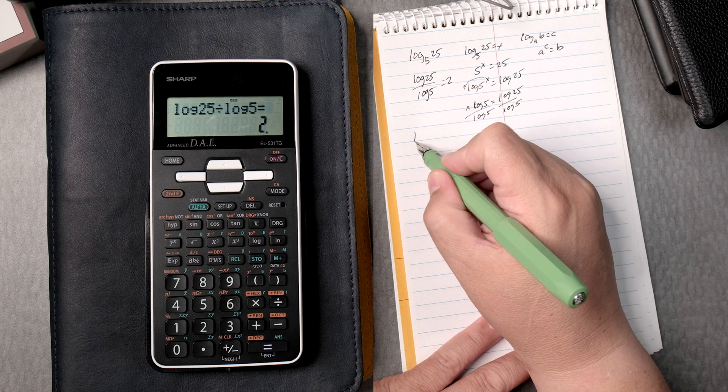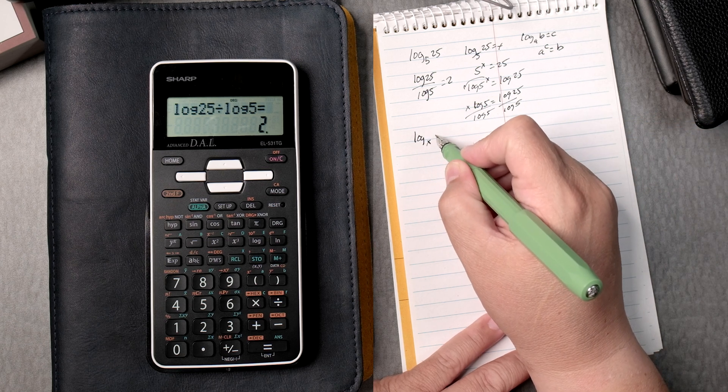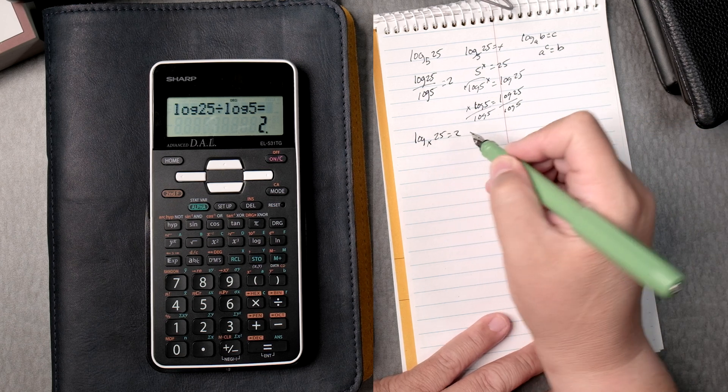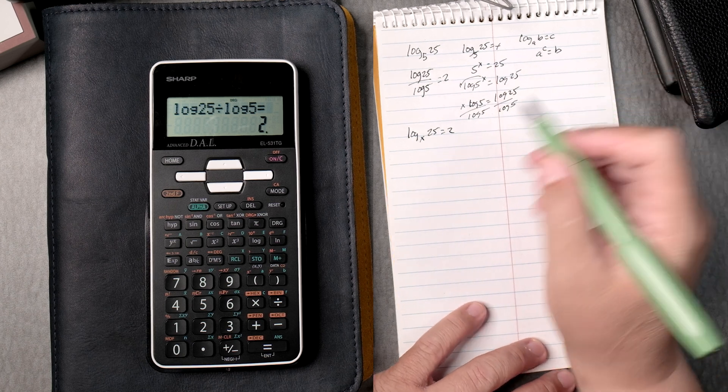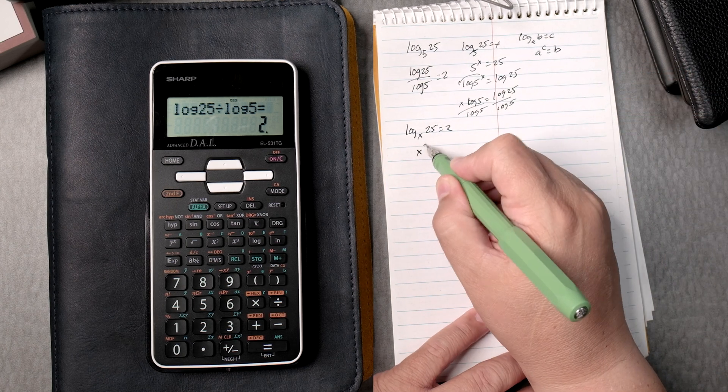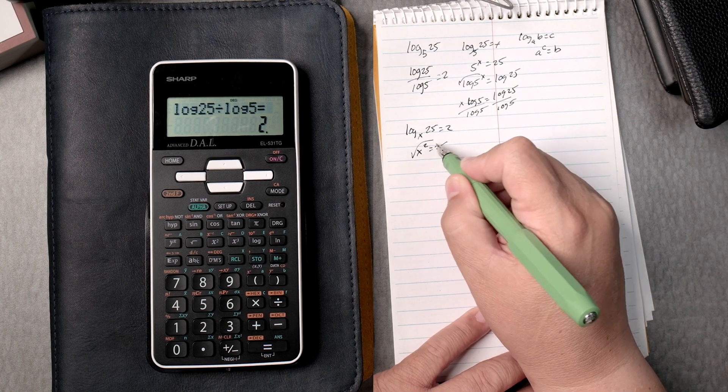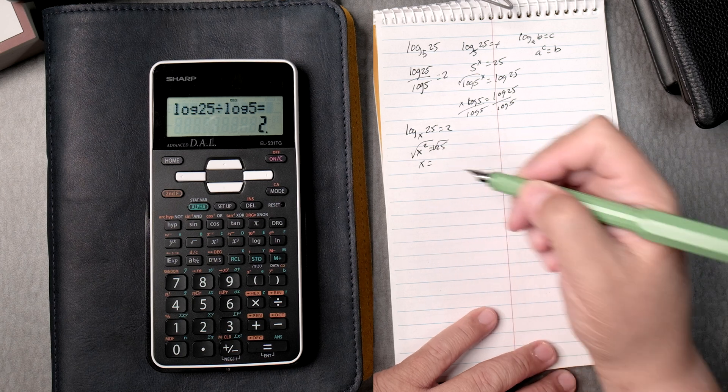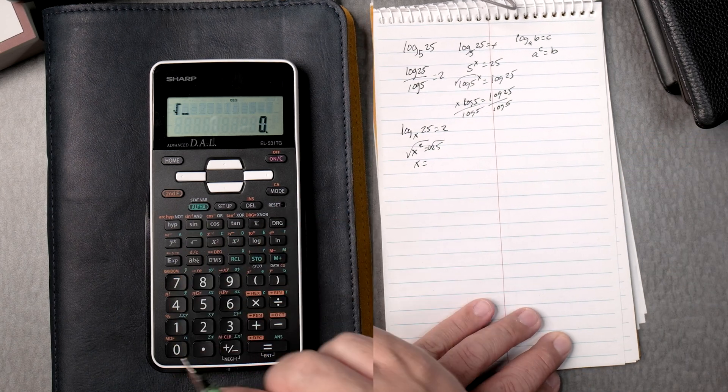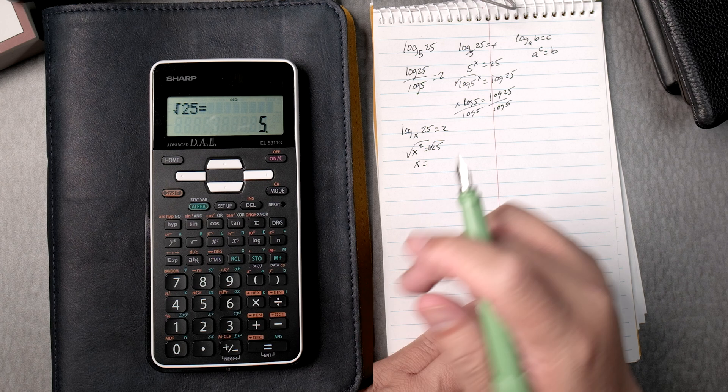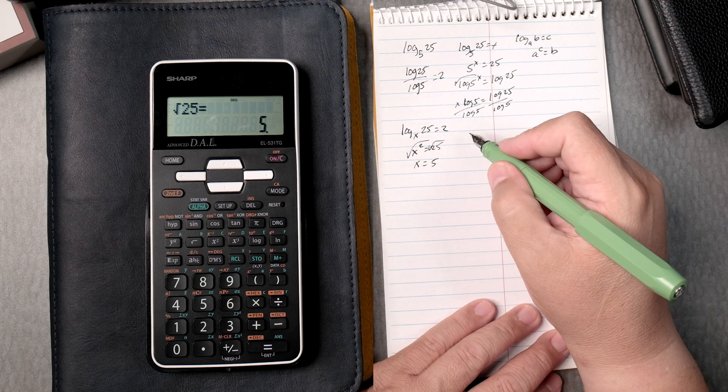Wow. That's a lot of work. Log of x, 25 equals 2. Going back to this rule, right? x squared equals 25. Take the square root of both sides, x equals, what's the square root of 25? Square root 25 equals 5. We kind of knew that.